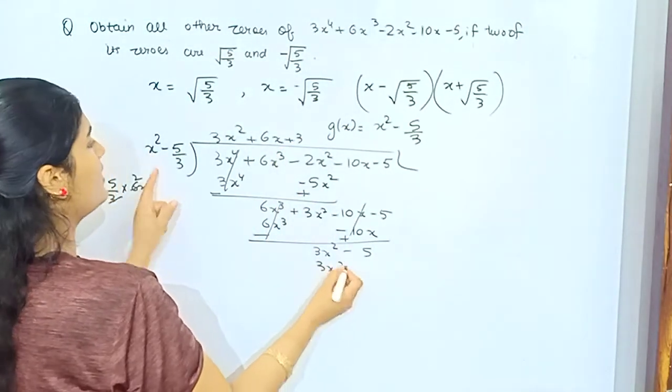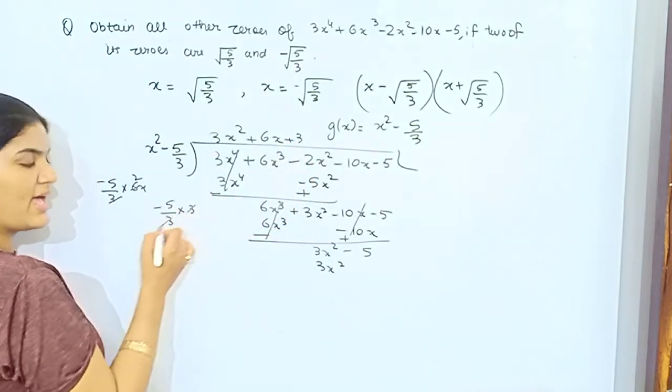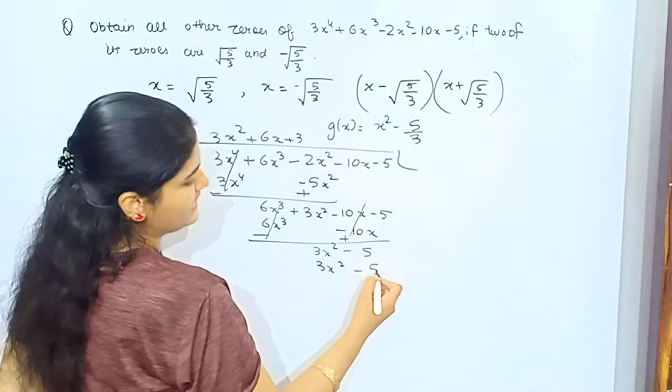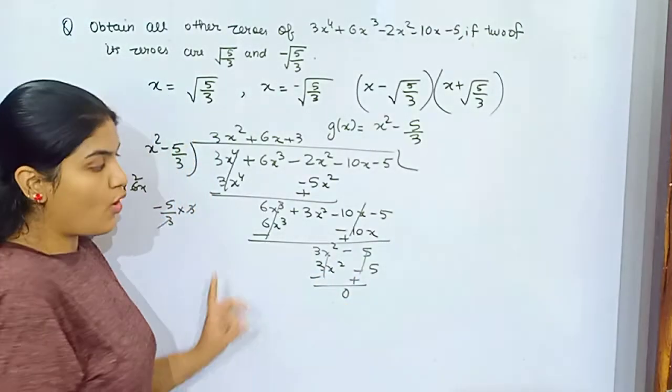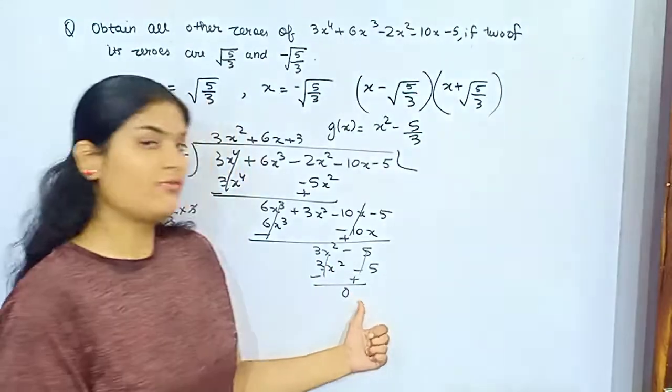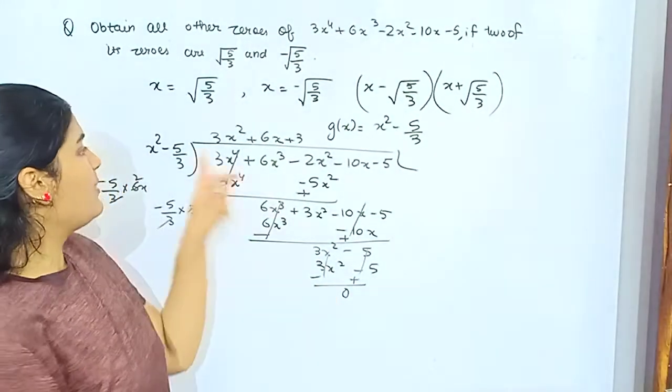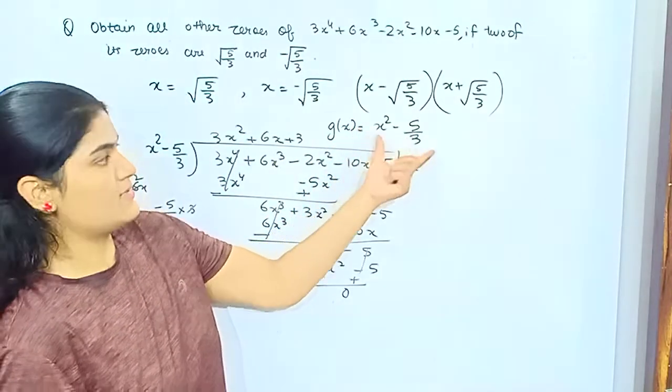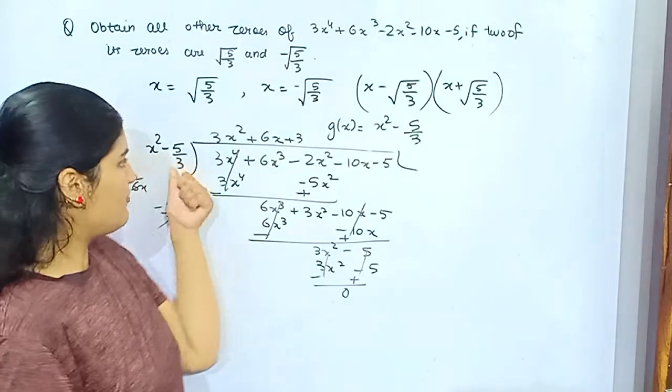Now you have x². You need only 3, so 3x². If you multiply this with this, -5/3 into 3, 3 will be cancelled and you will get -5. So you have got 0. Obviously you should have got this as 0.